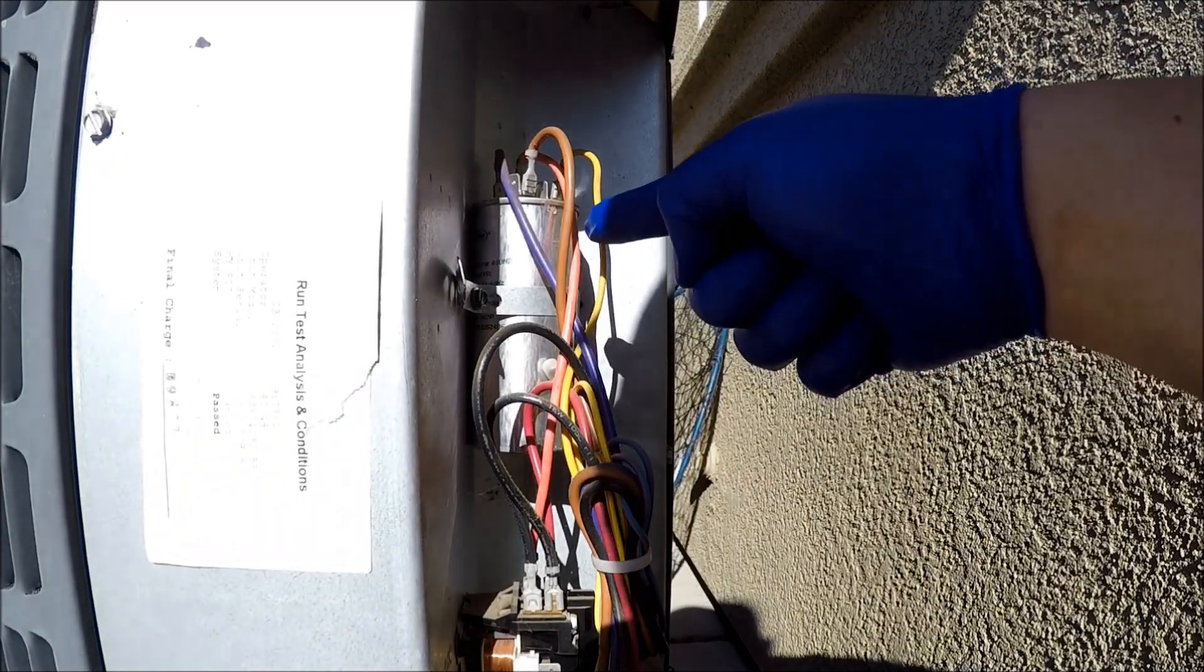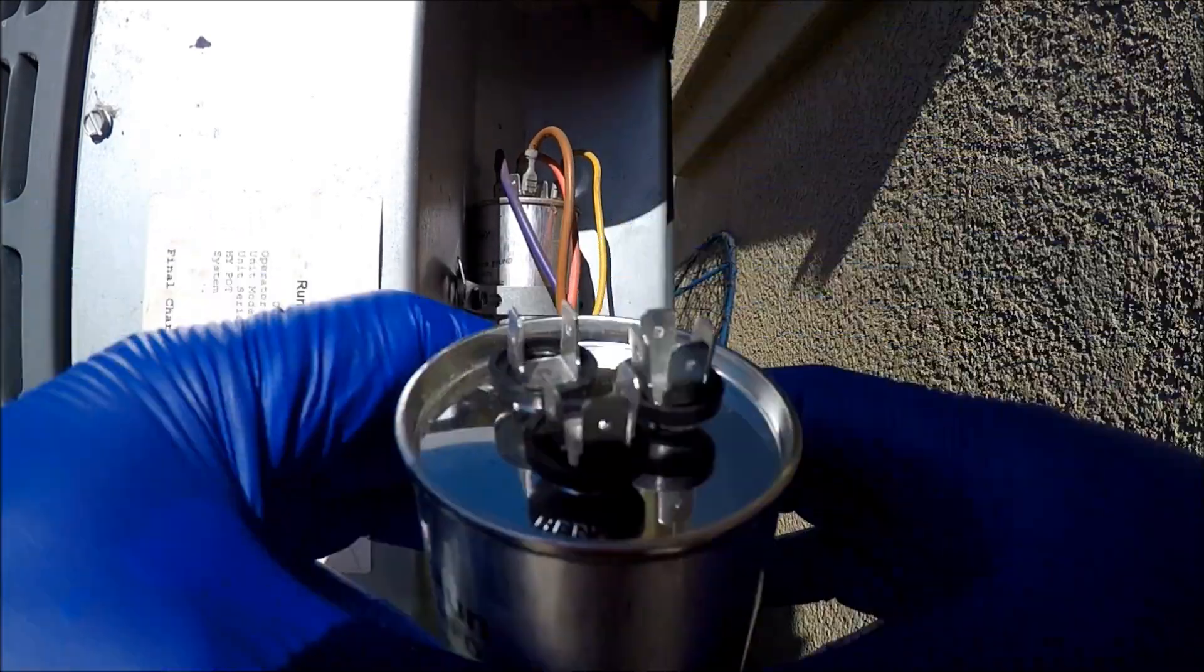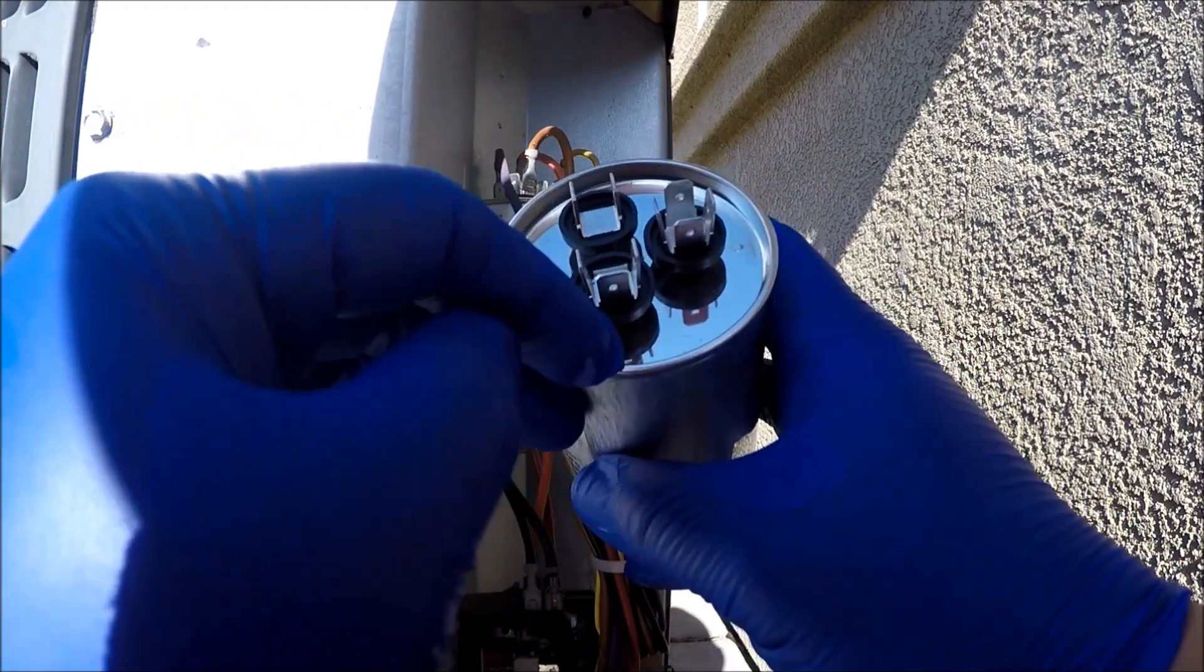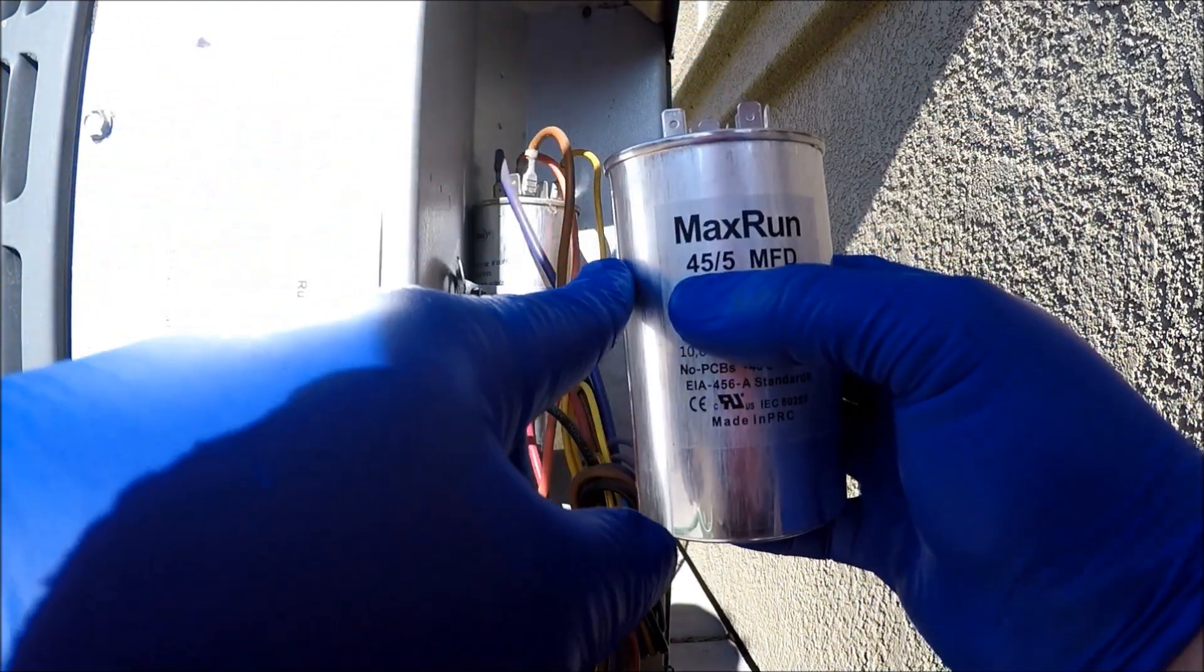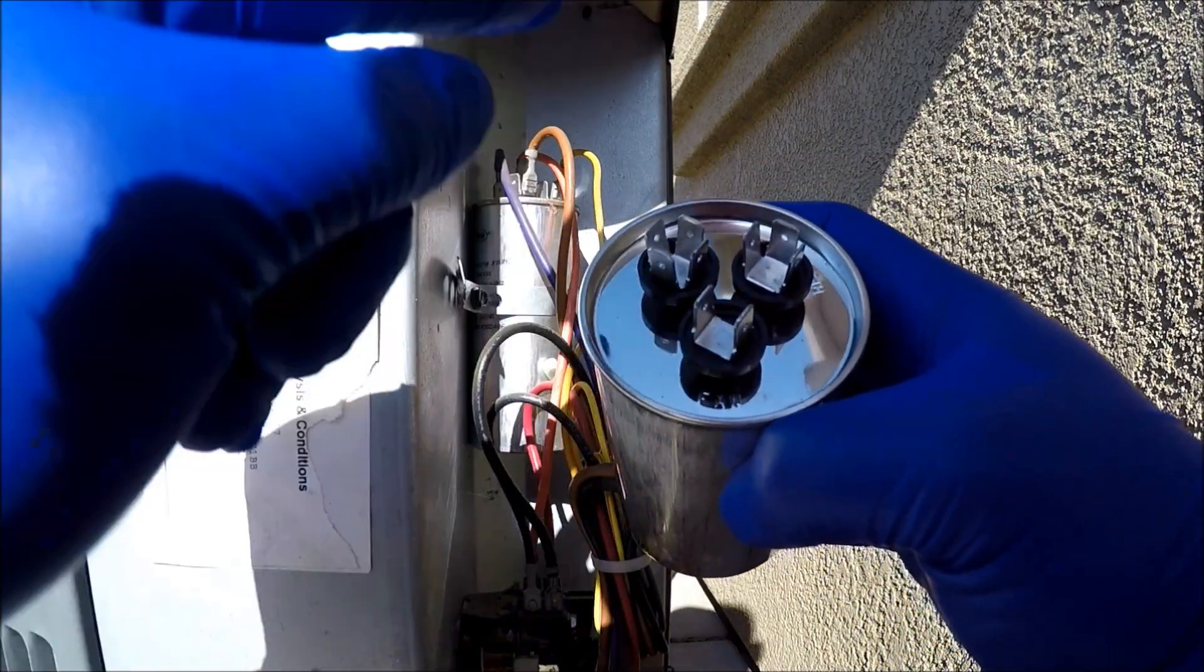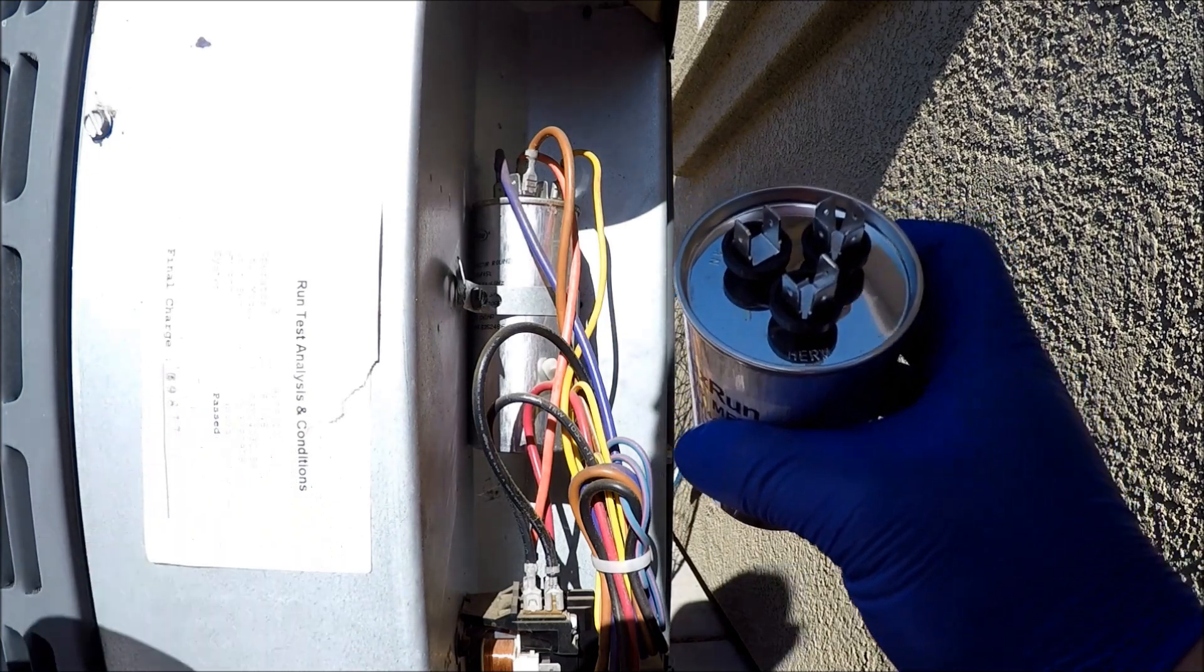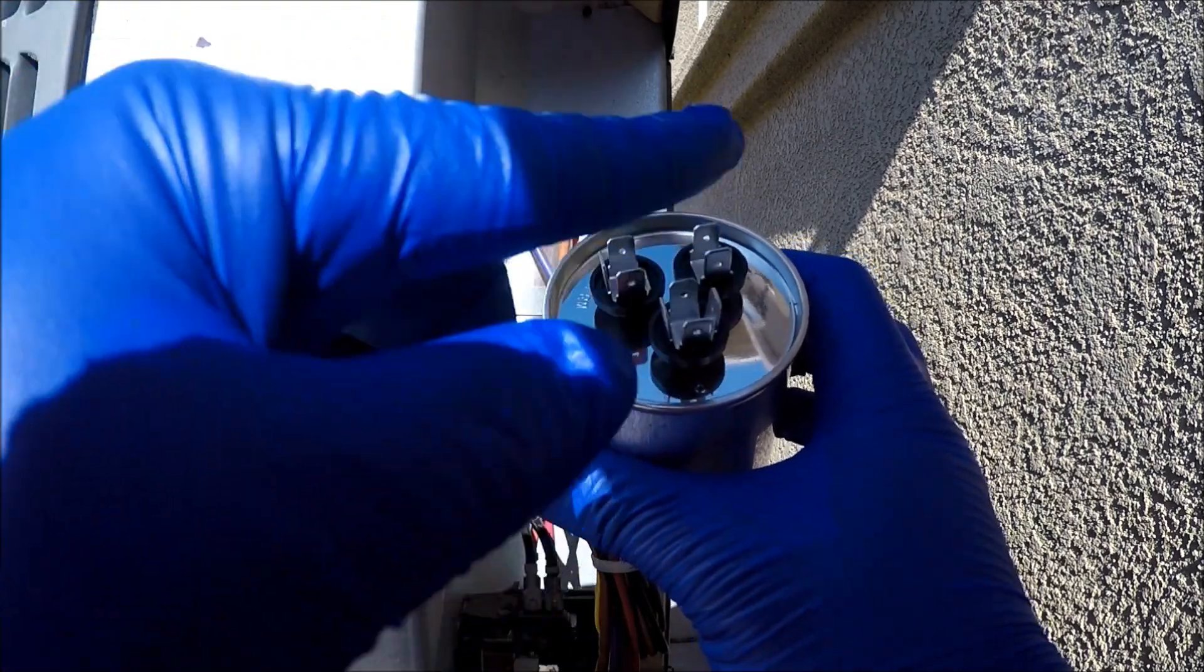Right there, this capacitor. This is a dual run capacitor, so it's got three ports just like this one. This is the new one. Got one, two, three. And they are labeled fan, Herm, and C. Basically this capacitor supplies the power to the fan and also supplies the power to the compressor. The fan obviously supplies the power to the fan. The Herm is the one that supplies the power to the compressor. And C is common, so basically it's a ground.